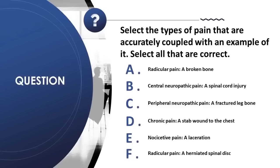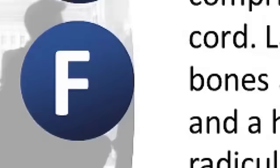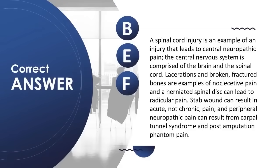Question 6: Select the types of pain accurately coupled with an example. A) radicular pain — broken bone; B) central neuropathic pain — spinal cord injury; C) peripheral neuropathic pain — fractured leg bone; D) chronic pain — stab wound to chest; E) nociceptive pain — laceration; F) radicular pain — herniated spinal disc. Correct answer is B, E, F. Spinal cord injury leads to central neuropathic pain. Lacerations and broken bones are examples of nociceptive pain. A herniated spinal disc can lead to radicular pain. A stab wound results in acute, not chronic, pain; peripheral neuropathic pain can result from carpal tunnel syndrome and post-amputation phantom pain.